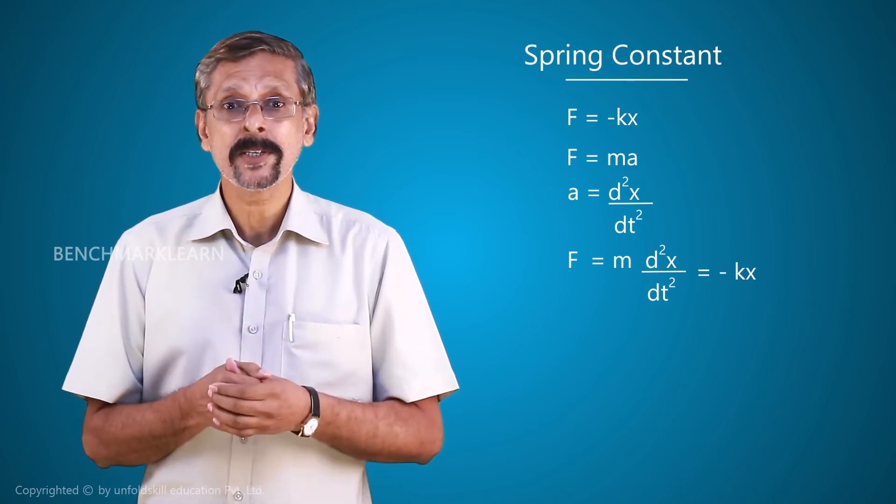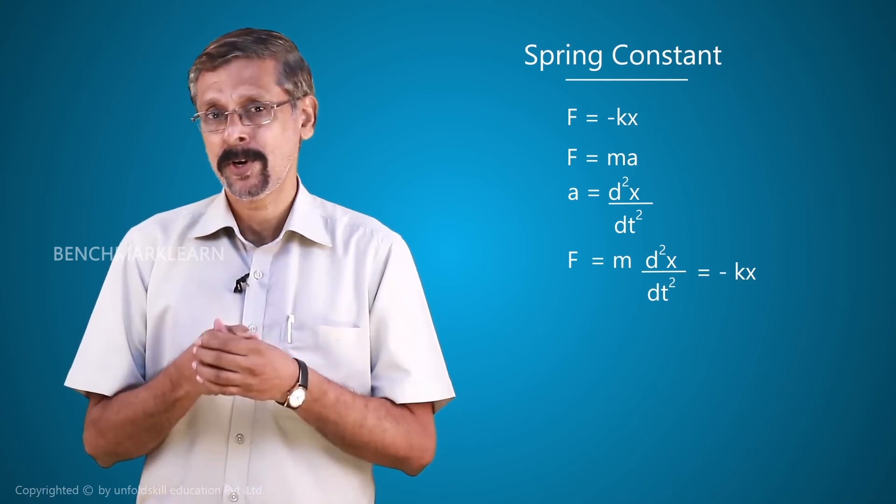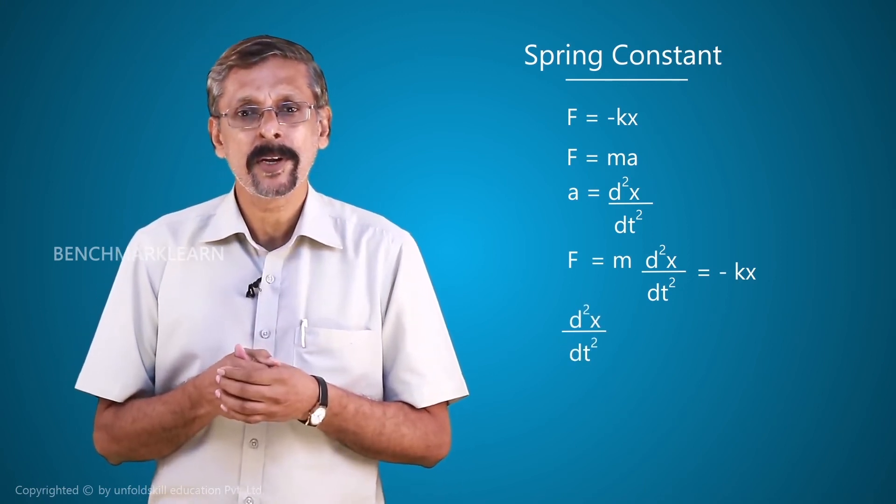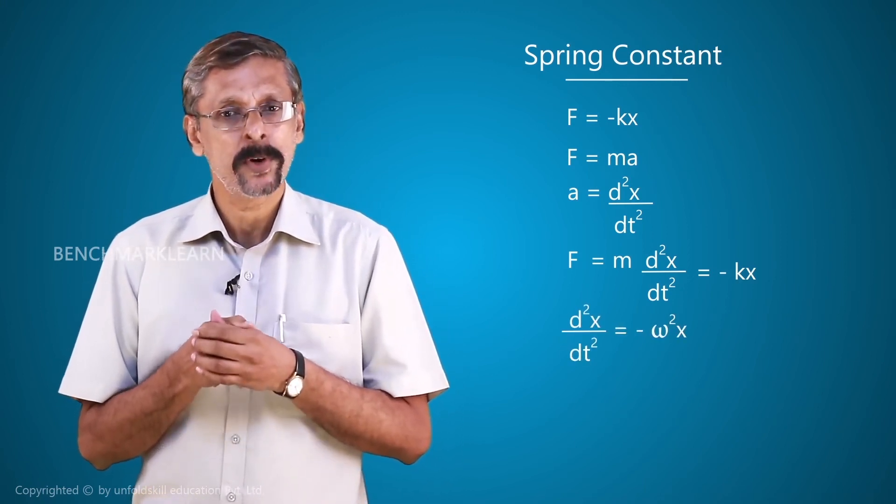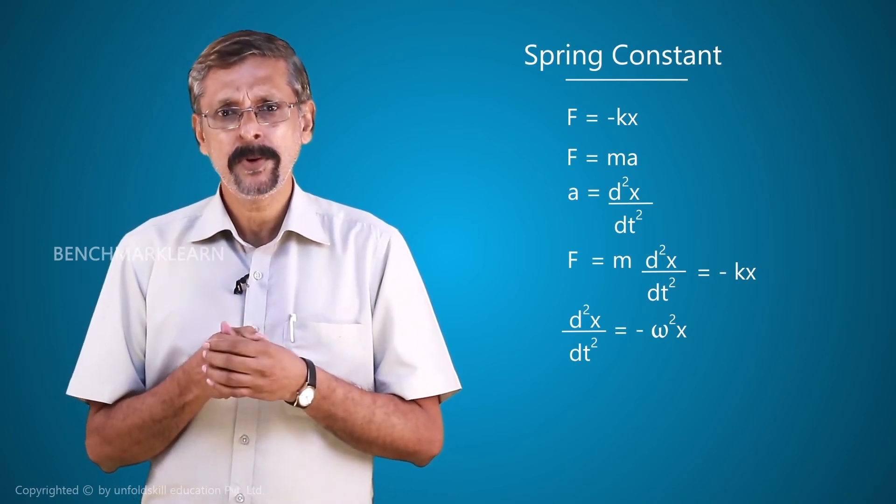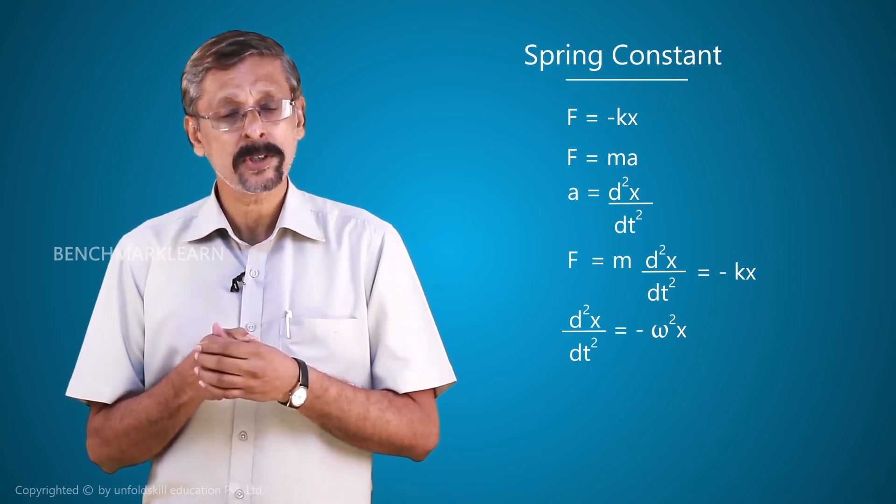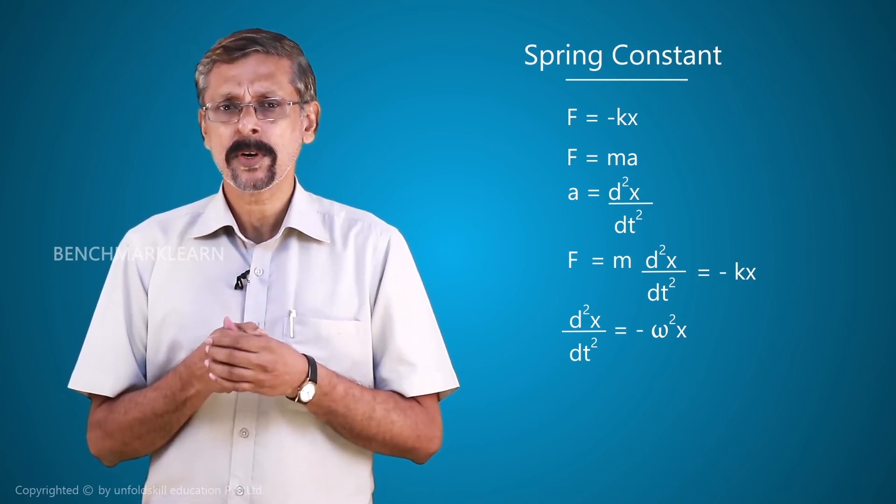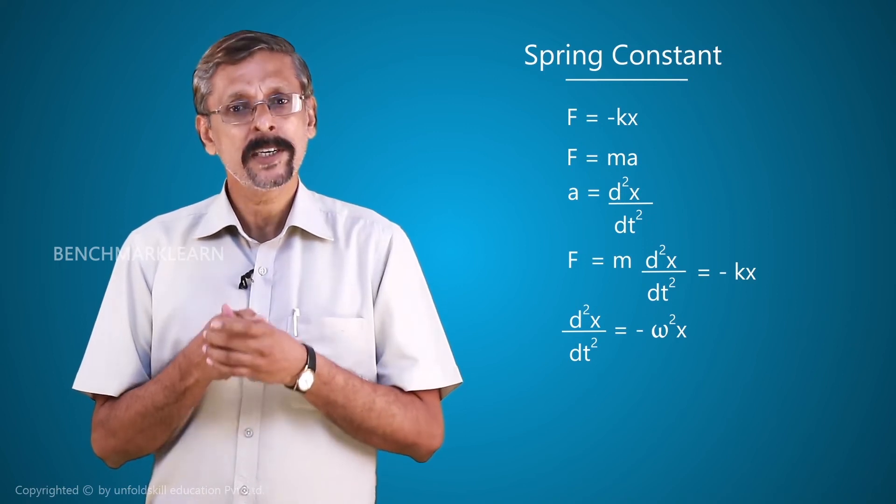But already, we have an equation representing the value of d²x/dt². d²x/dt² equal to minus ω²x. Now we have to make a substitution, m(d²x/dt²) is equal to minus kx. By substituting the value for d²x/dt², we get an equation, m(-ω²x) equal to minus kx.